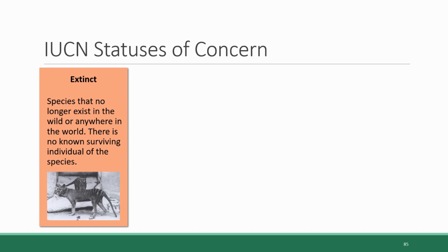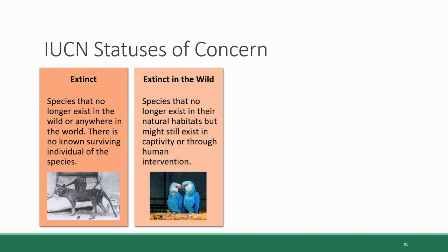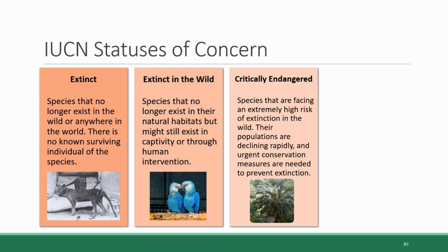One small step down from that category is extinct in the wild — species that no longer exist in their natural habitat but still exist in captivity or through human intervention. One example is Spix's macaw, a parrot native to Brazil that has been considered extinct in the wild since 2019, although there are still some birds being cared for by conservation organizations or zoos, and efforts are being made to reintroduce them to the wild. Then there's the category critically endangered — species facing an extremely high risk of extinction in the wild, with rapidly declining populations requiring urgent conservation measures. The Albany cycad, a plant endemic to the Eastern Cape region of South Africa, is in this critically endangered category, with only 70 individual plants left as of July 2023, according to the IUCN.